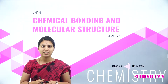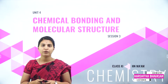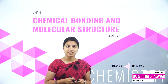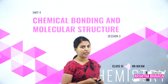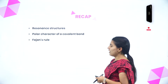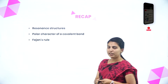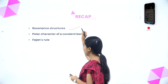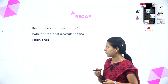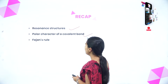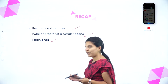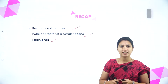Hello everyone, this is Harshita Bhavasar from Vidyashram School of Excellence. Today we are starting session 3 from the chapter chemical bonding and molecular structure. In the last class we discussed resonance structures, their uses, resonance hybrid, polar character of a covalent bond, and Fajan's rule.